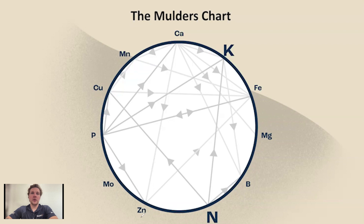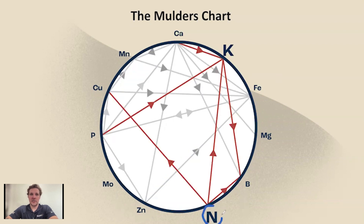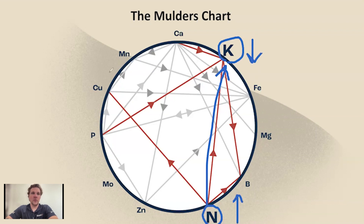Now that we've learned about Liebig's Law of the Minimum, let's move on to Mulder's chart — and keep in mind how that affects crop yield and your potential at the end of the year. As we look at Mulder's chart here, we can see arrows going in different directions with the nutrients on the outside. When we have an arrow going from one nutrient to another, this shows us that when we have an excess of one nutrient, we're going to tie up the other, inducing a deficiency. For instance, there's an arrow going from N to K, telling us that when we over-apply nitrogen, we're going to limit the uptake of potassium, therefore inducing a deficiency.